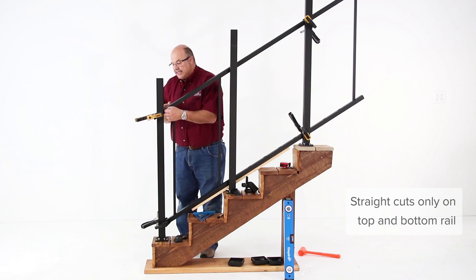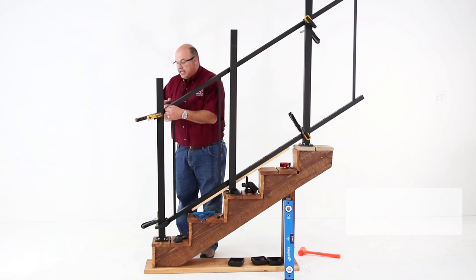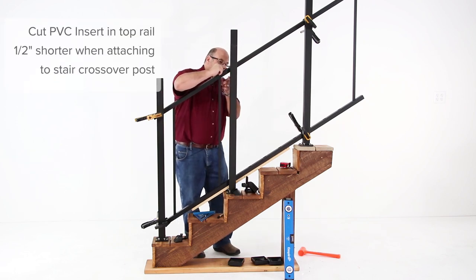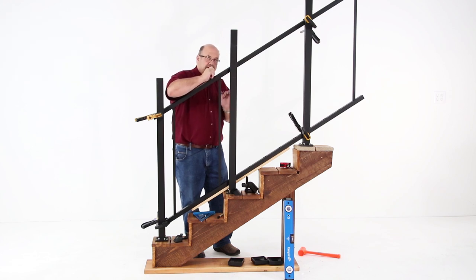On the top and bottom rail on the top side, you're going to mark 3/16ths off the plane. And on the top side of the stair system, you're going to mark 3/16ths off the post wall on the bottom of the rail.